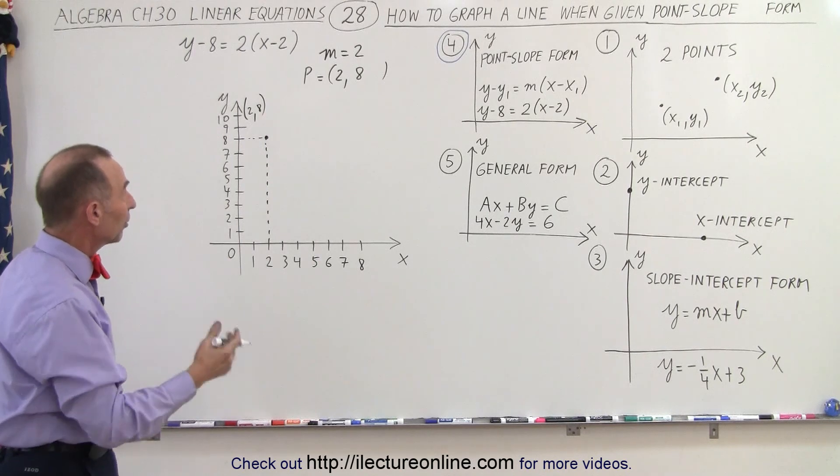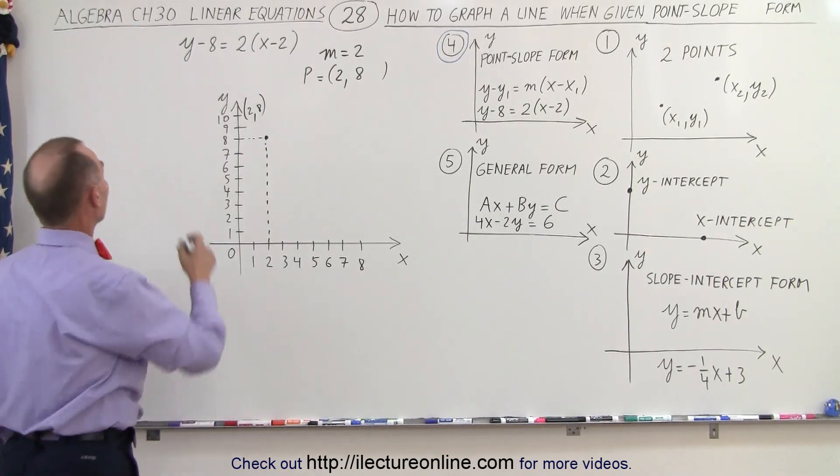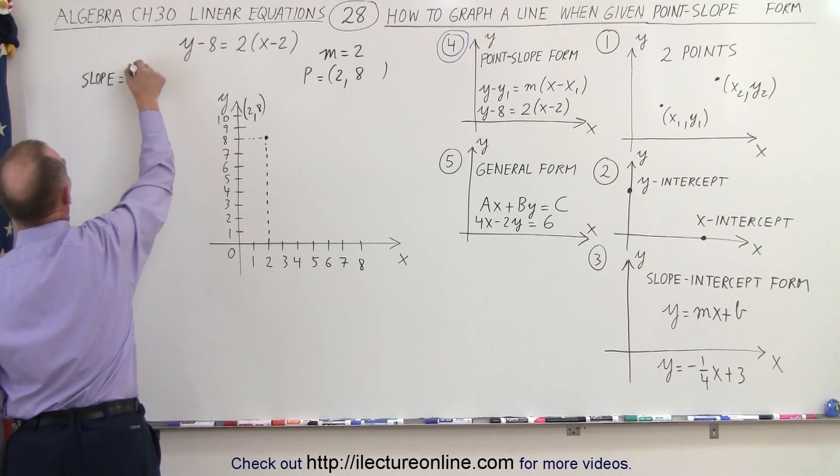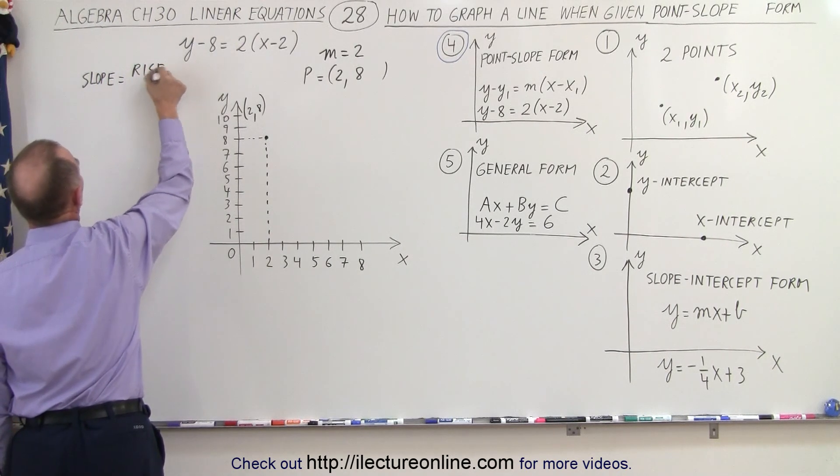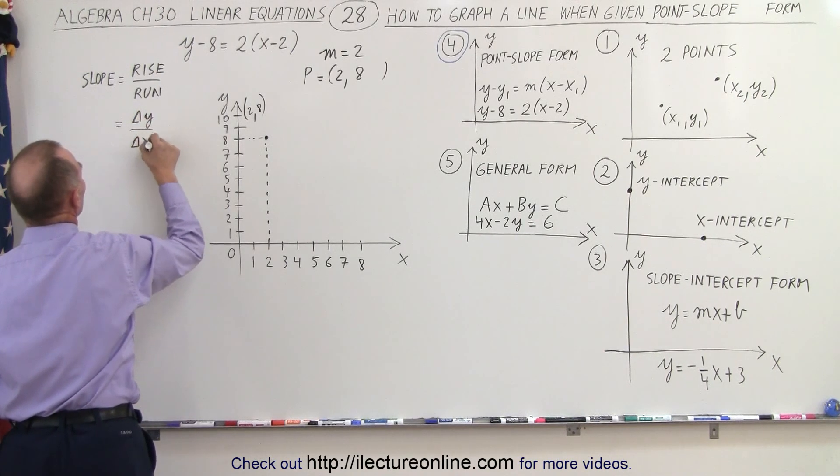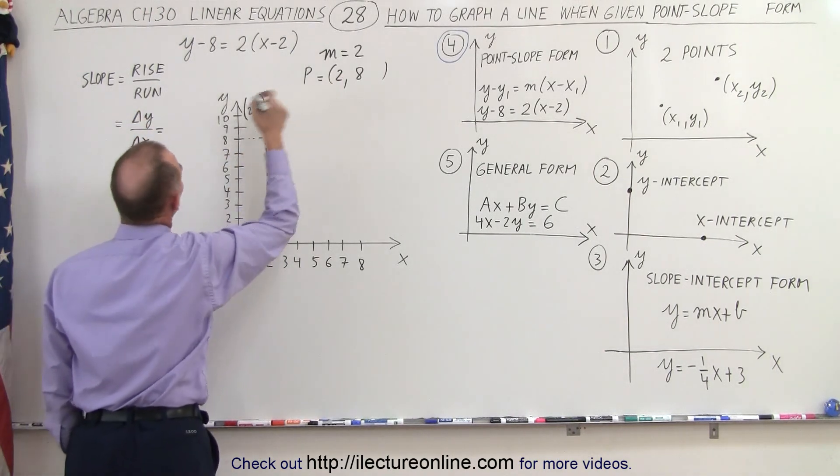Now we need to find another point on the line. We can use the slope for that. Remember that the slope, by definition, is equal to the ratio of the rise over the run, which means that it's the ratio of the change in the y divided by the change in x. In this case, that is equal to 2.